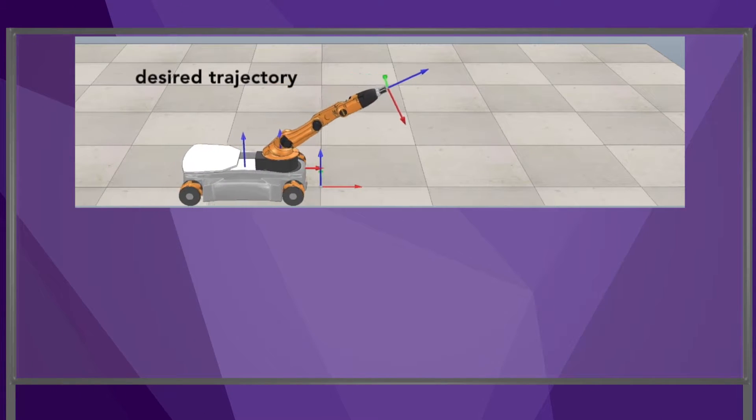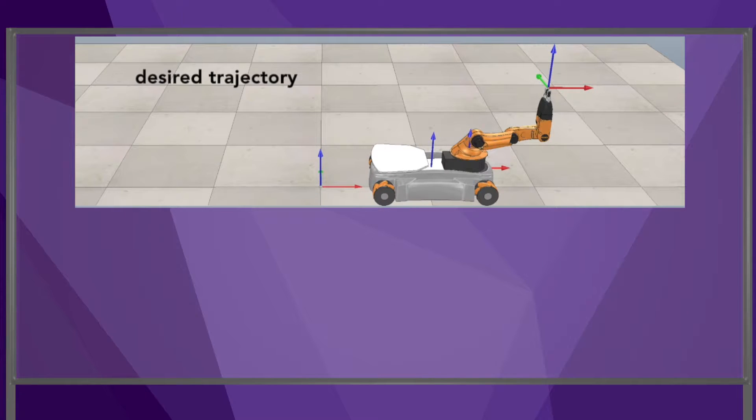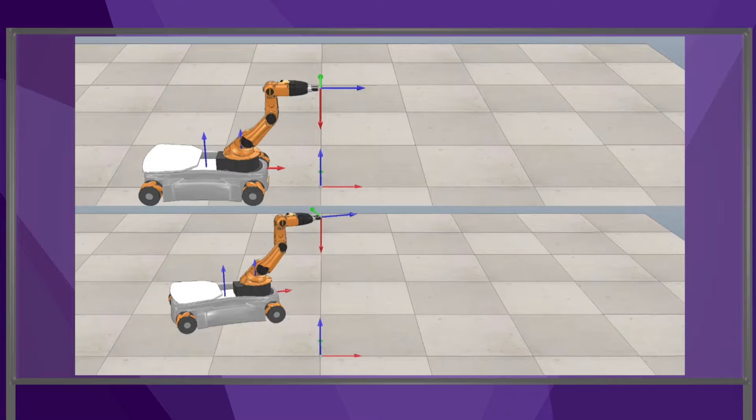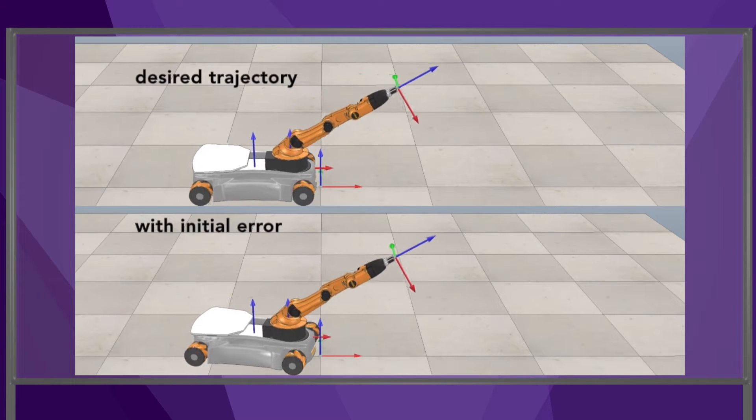In this animation, the robot's end effector tracks a pre-planned trajectory in SE3. In the animation below, the robot starts with some error in the configuration of the end effector, but the feedback controller quickly brings it back to the pre-planned trajectory.